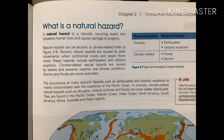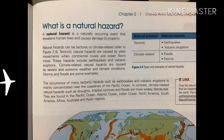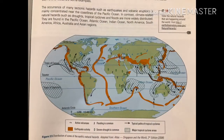Natural hazards are basically tectonic or climatic in nature. They are naturally occurring events that threaten human lives and cause damage to property in different areas of the earth. This map shows the distribution of some of the earth's natural hazards — both climatic as well as volcanic and tectonic — and the distribution is very diverse and spread out.